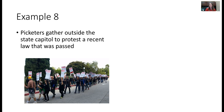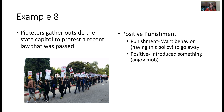The final example: picketers gathering outside the state capitol to protest a recent law that was passed. In terms of how they're trying to shape the lawmakers' behavior, it's positive punishment — they want the behavior of enacting this policy to go away, and it's positive because they're introducing something: an angry mob that wasn't there before. If you flip this, say workers going on strike, that would be negative punishment — taking away something the employer wants, their work, in order to make that happen. Hopefully that clears up operant conditioning, positive and negative reinforcement, and positive and negative punishment.